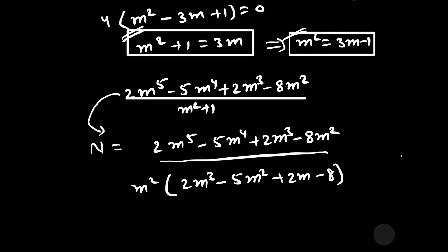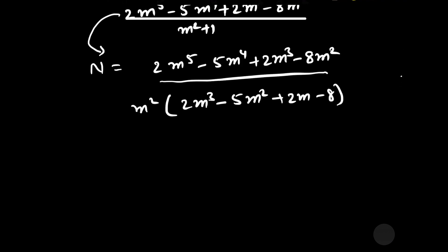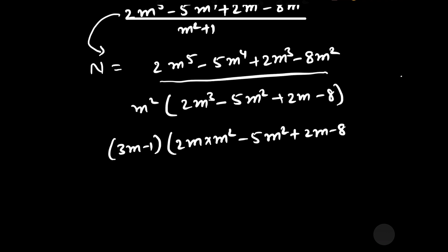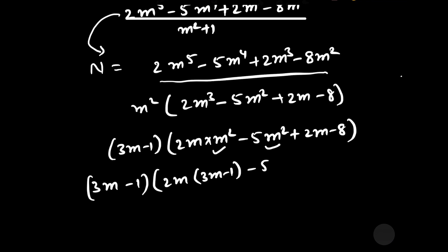Substituting m² = 3m − 1, we can write 2m³ as 2m · m² = 2m(3m − 1). So the bracket becomes 2m(3m − 1) − 5(3m − 1) + 2m − 8. Expanding: multiplying 2m with (3m − 1) gives 6m² − 2m, minus 15m plus 5, plus 2m minus 8. The −2m and +2m cancel out.